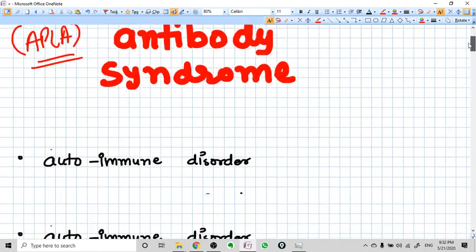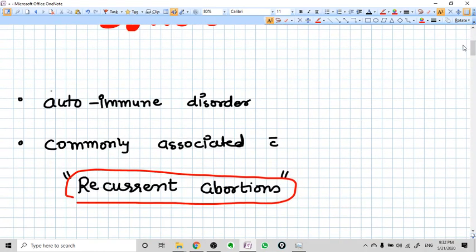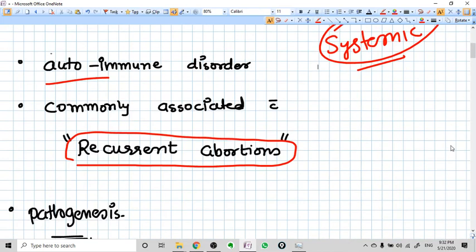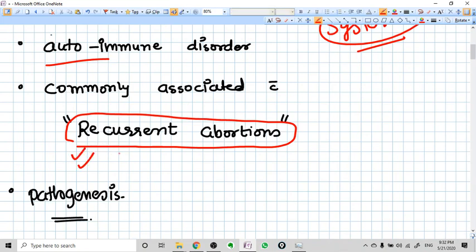First of all, it is an autoimmune disorder and it is a systemic disorder. It is not just related to obstetrics and gynecology. It's an autoimmune disorder and a systemic disorder. Why are we studying this syndrome in obstetric gynecology? Because we get recurrent abortions. The APLAS syndrome is a very prominent cause of recurrent abortions. That's why we are learning this syndrome in obstetrics.